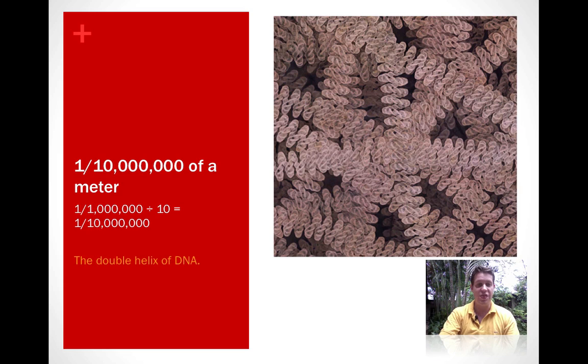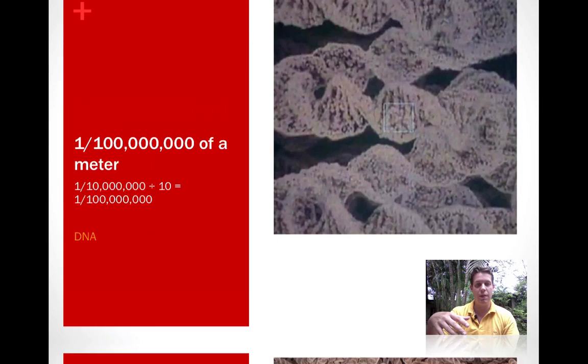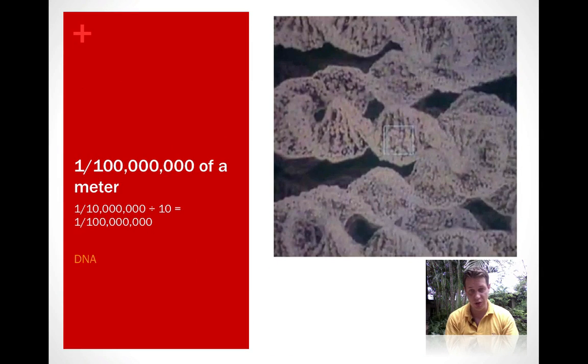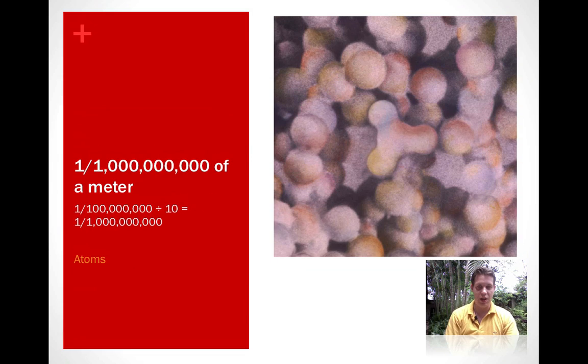If we take 1/10,000,000 of a meter, divide that by 10, we get 1/100,000,000 of a meter. And we can see the DNA up close. If we take 1/100,000,000 of a meter and divide that by 10, then we zoom all the way in to 1/1,000,000,000 of a meter, and we can start to see the atoms that make everything in the universe.